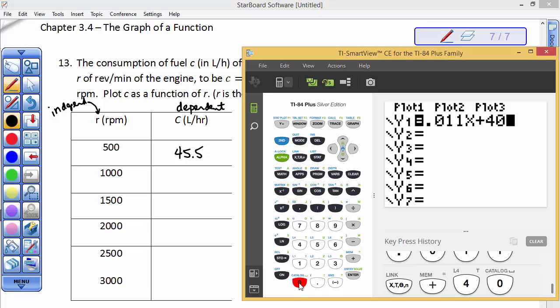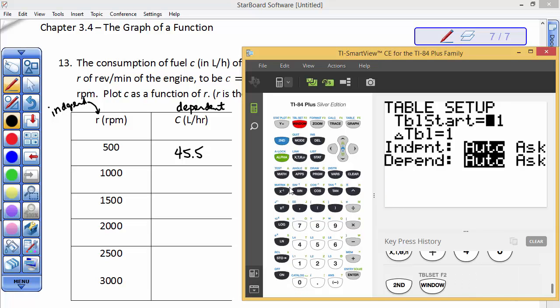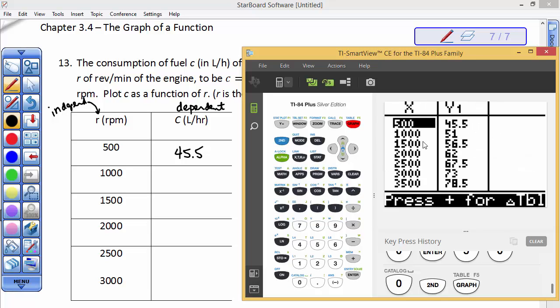Then I'm going to go second table set and I'm going to ask it to start at 500 and go in increments of 500, auto auto like we always have.